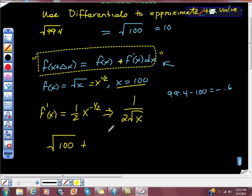This plus sign right here is this one right here. f prime at x is 1 over 2 times square root of 100, right? Times the change in x, so now I'm looking for this piece right here, this change in x value, and the change in x value is negative 0.6, isn't it?